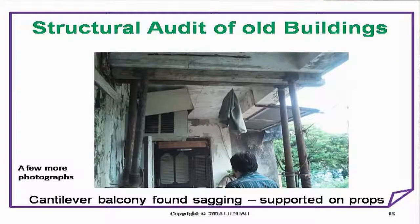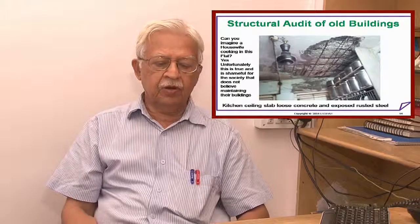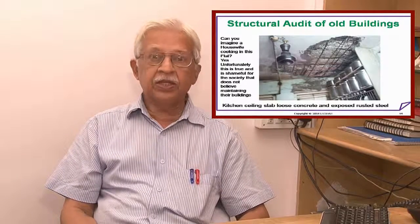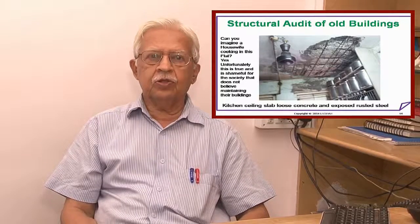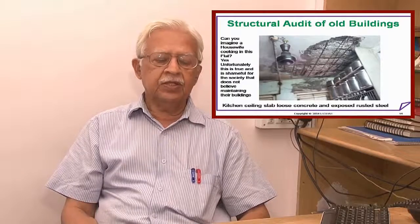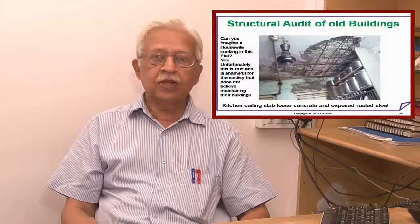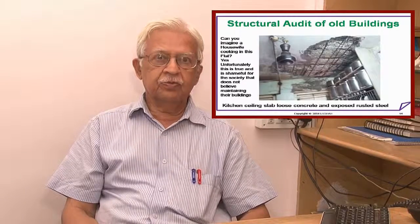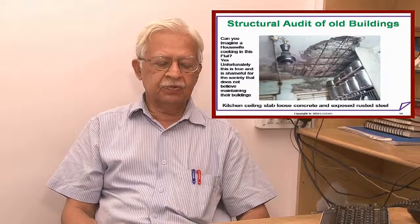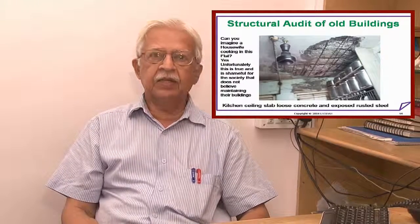A few more photographs. Cantilever balcony found sagging, supported on props. Is it not dangerous? Another photograph: kitchen ceiling slab with loose concrete and exposed rusted steel. Can you imagine a housewife cooking in this flat? Unfortunately, this is true. It is shameful for a society that does not believe in maintaining their buildings.